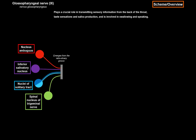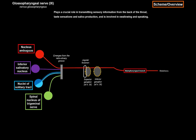The motor part goes through the jugular foramen, through the superior and inferior ganglia of the glossopharyngeal nerve, then innervates the stylopharyngeus muscle. The parasympathetic component takes a more complicated route — it goes through the jugular foramen, then gives off the tympanic nerve. The tympanic nerve passes through the tympanic canaliculus, enters the tympanic cavity, and within that cavity forms the tympanic plexus.